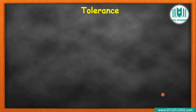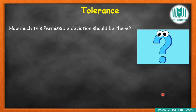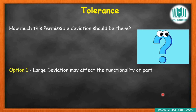So according to that, while manufacturing a product directly, we need to decide the permissible deviation. Suppose the size is 56 mm — if one component becomes 56.20 mm, is it valid or not? If another component becomes 55.90 mm, is it valid or not? So we need to define what limits to keep for the permissible deviation.